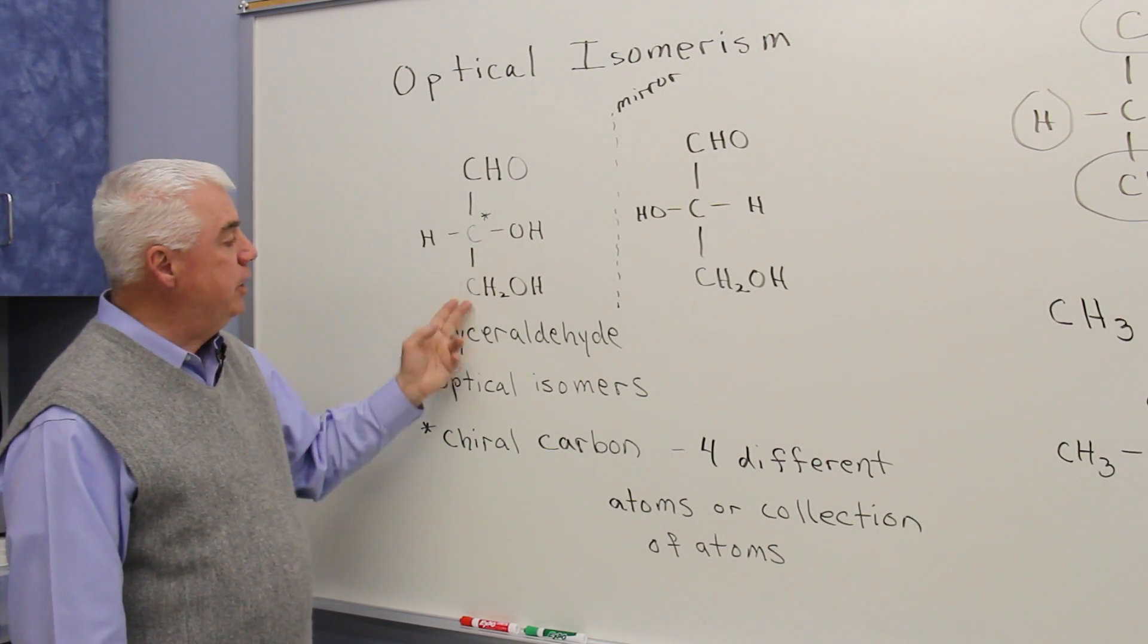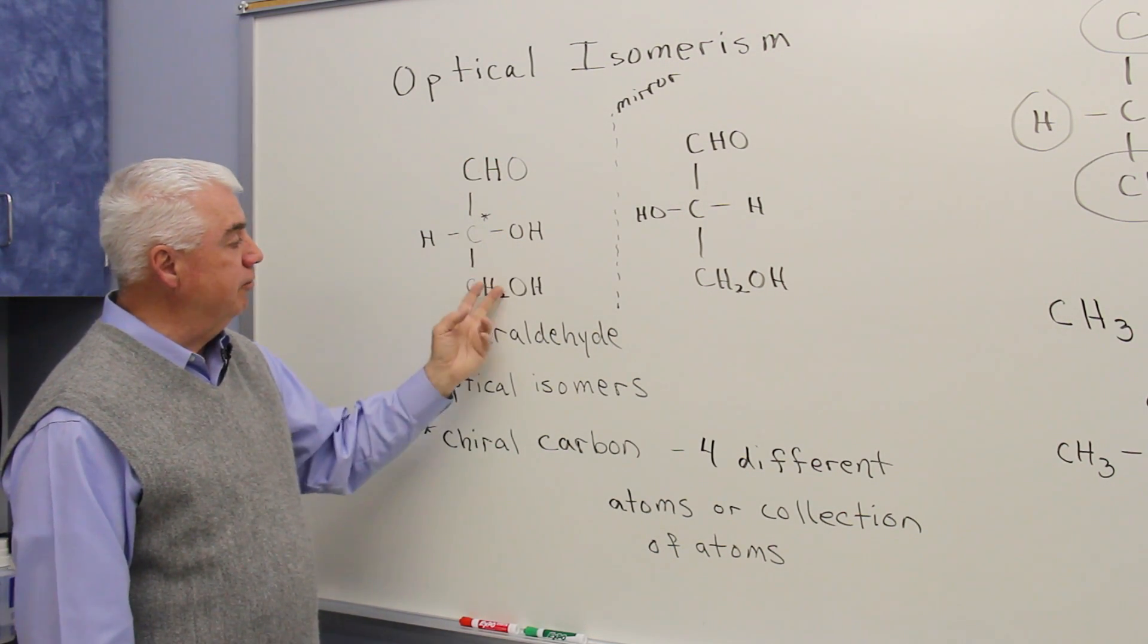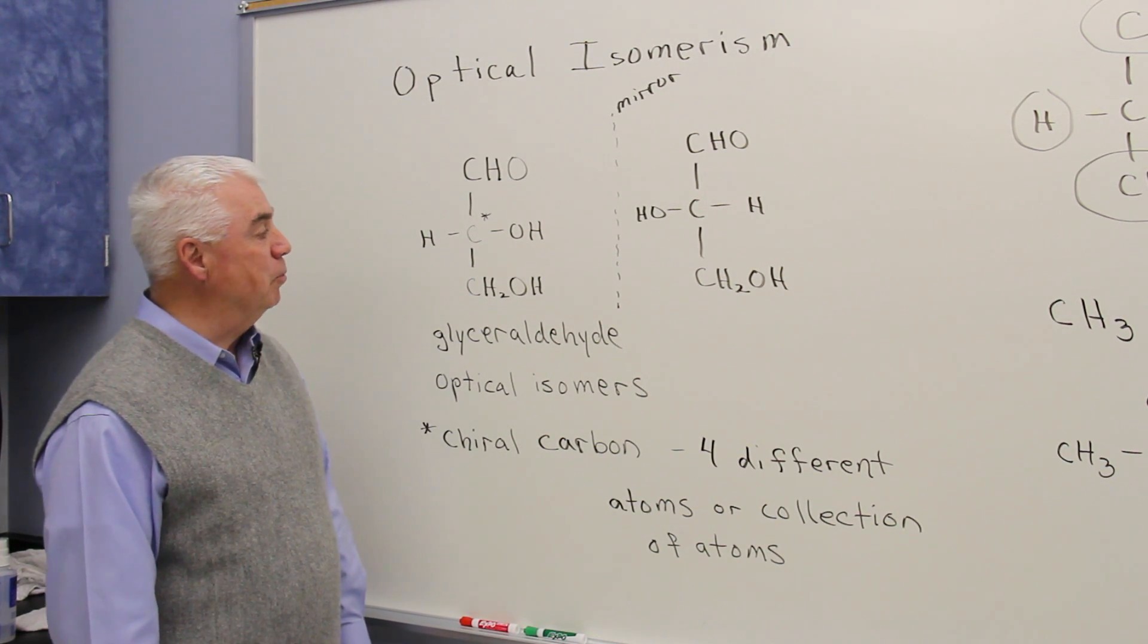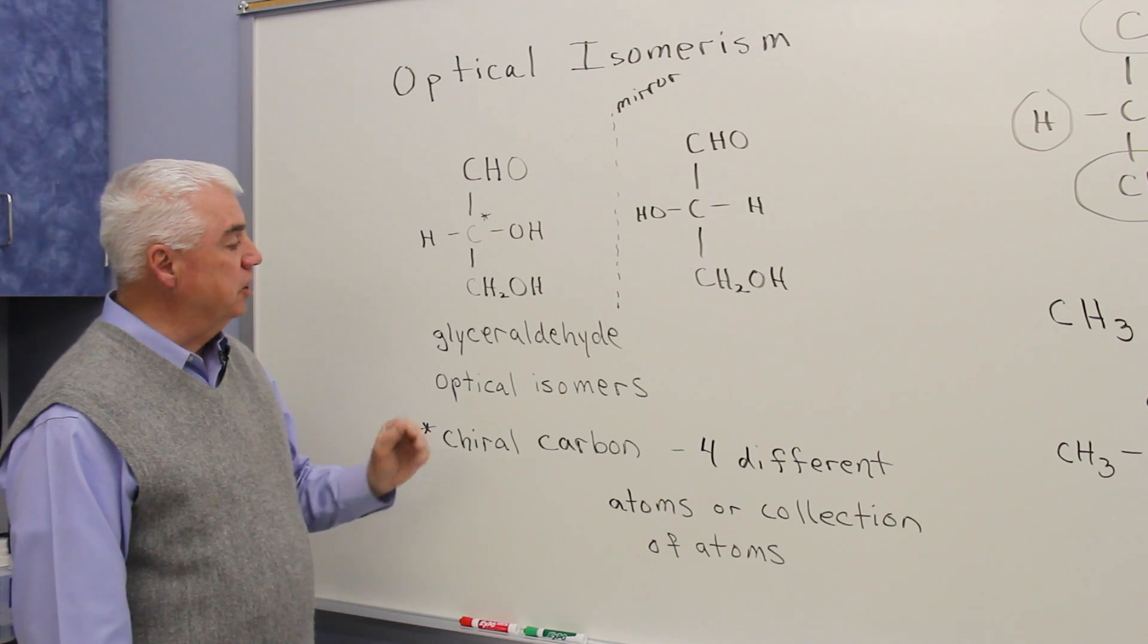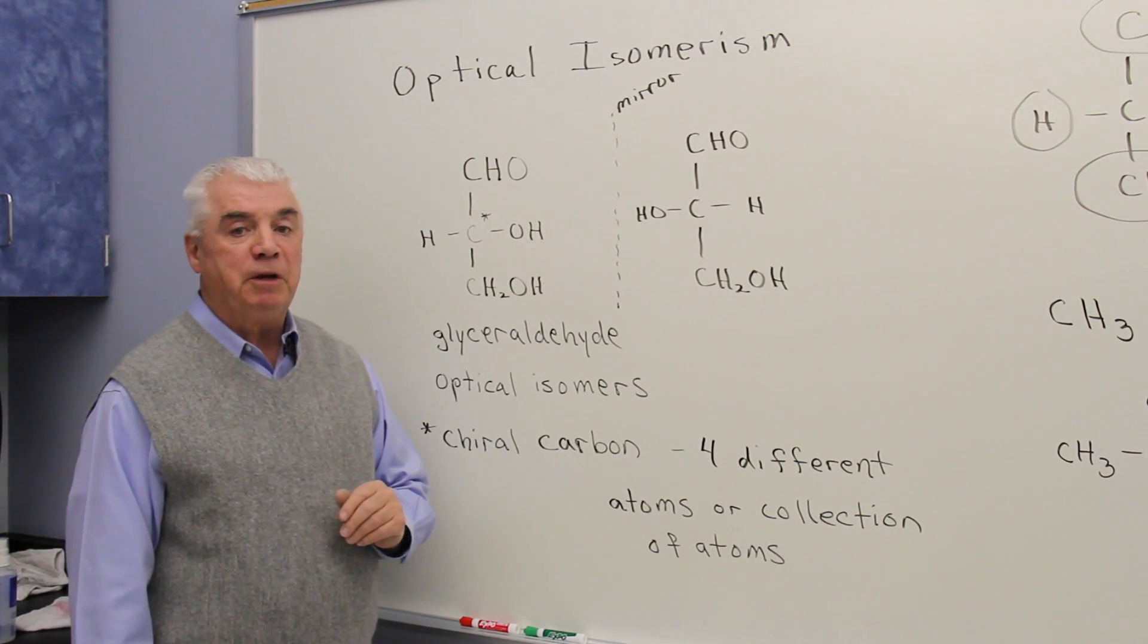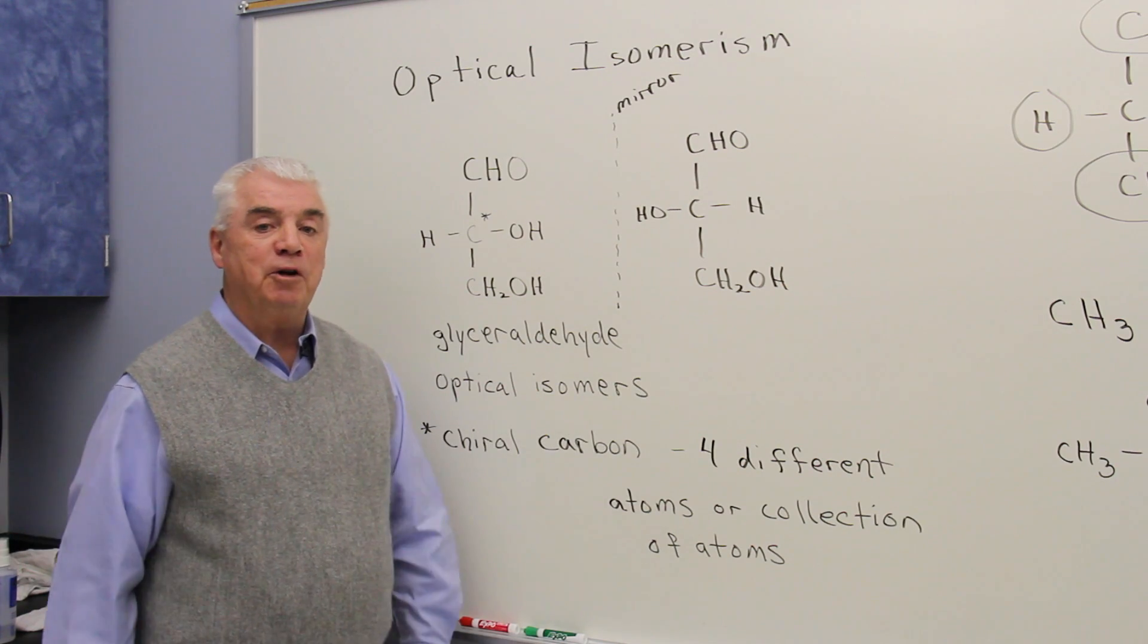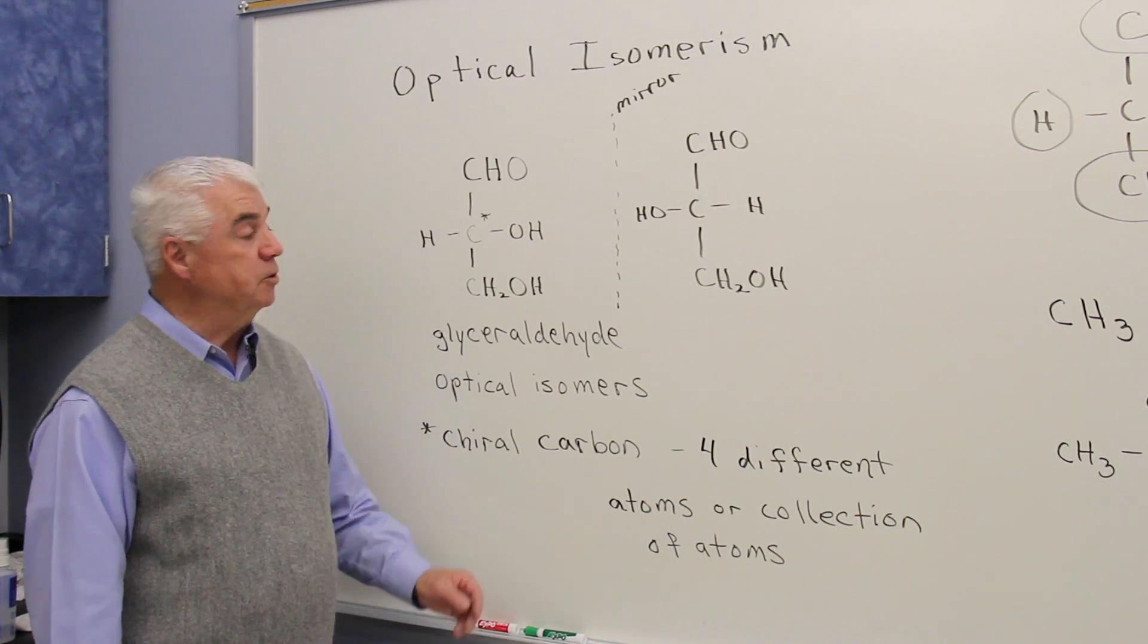There are three carbons, so it's a triose. There's an oxygen or a functional group on each carbon that's characteristic of carbohydrates. And what we find is that glyceraldehyde can exhibit two forms, and that these two forms are simply mirror images of one another. But they're isomers.